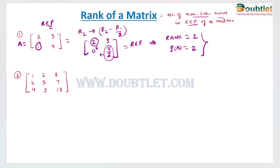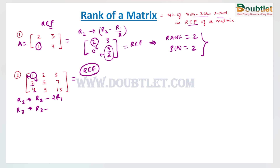Now we will discuss another example — a matrix of three-cross-three order: 1, 2, 3; 2, 5, 7; and 4, 9, 13. We apply the same process: find the row echelon form. The leading element in row one is the pivot. We need to make the two and the four below it zero. So we apply R2 minus two R1, and R3 minus four R1.